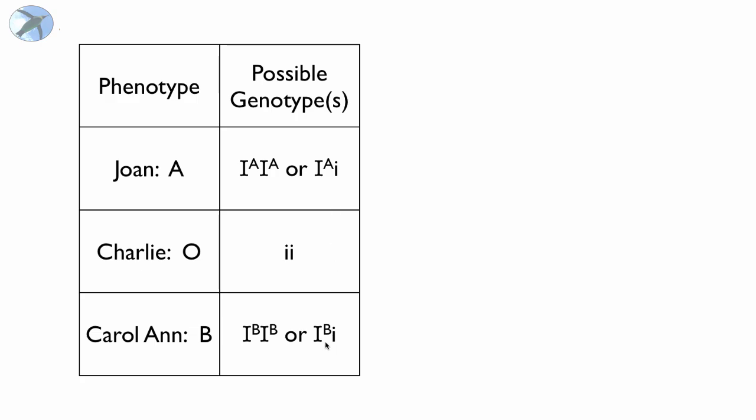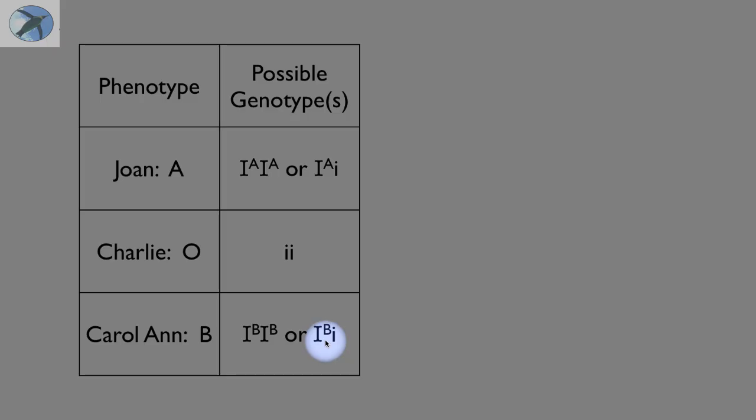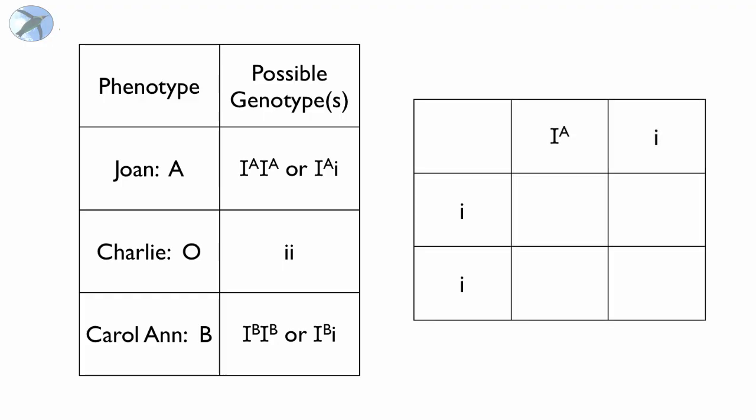That means that Carol Ann had to be heterozygous for B, and she had to get this B from someone else, not from Charlie. So here is the Punnett Square for everybody involved. Charlie and Joan can only produce offspring that are either type A or type O. Charlie was not the father of this child.